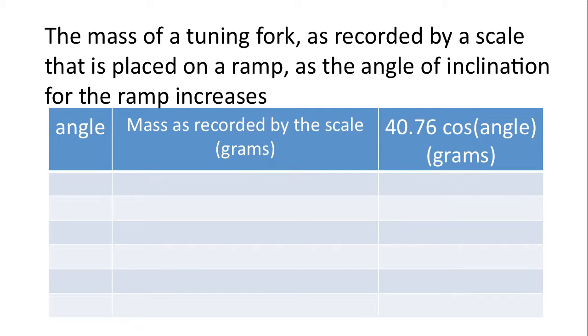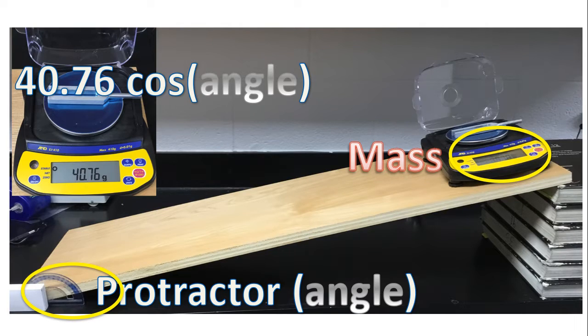I'm going to ask you to record the following two pieces of data. Angle of inclination of the ramp, and the mass as recorded by the scale. Now, once you get the angle, I'm going to ask you to compute or calculate 40.76 times the cosine of the angle. So we'll measure the angle with the protractor, as you can see in the diagram. The mass, of course, will be measured with the digital balance.